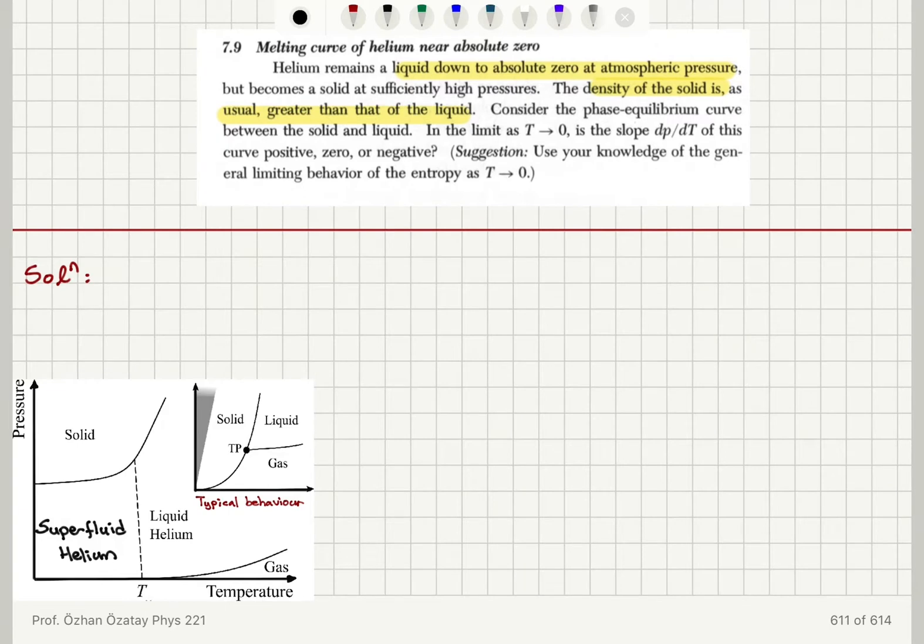Consider the phase equilibrium curve between the solid and liquid. In the limit as T goes to zero, is the slope dP/dT positive, zero, or negative? Use your knowledge of the general limiting behavior of entropy.